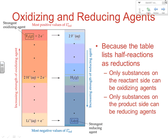Because the table lists half reactions as reductions, only the substances on the reactant side can be oxidizing agents — those are on the left. The lower down on the table, the less likely you are to be an oxidizing agent. Only the substances on the product side can be reducing agents. The farther down you go, the stronger the reducing agent and the more likely it is to be oxidized. The higher up, the less likely you are to be oxidized.